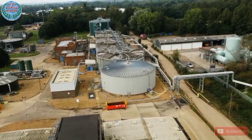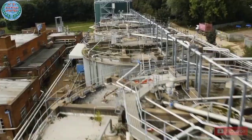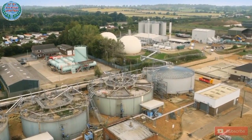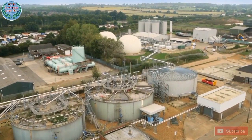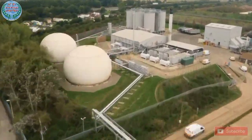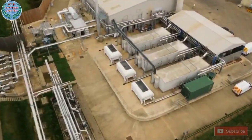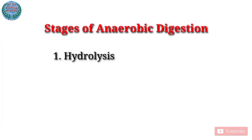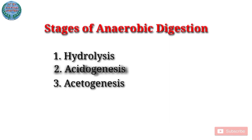Anaerobic digestion is used as part of the process to treat biodegradable waste and sewage sludge as part of an integrated waste management system. Anaerobic digestion reduces the emission of landfill gas into the atmosphere.